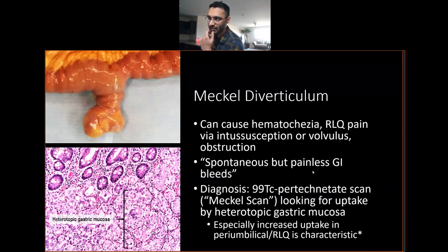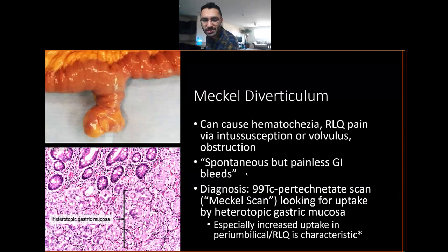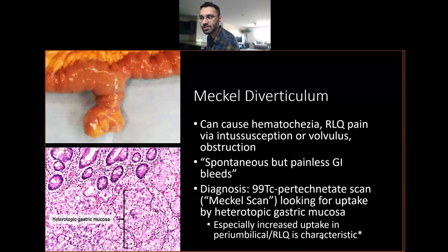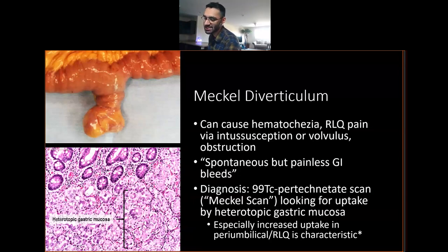The biggest high-yield board exam takeaway for Meckel's diverticulum is the diagnosis and presentation. Similar to diverticulosis in older people, you get spontaneous but painless GI bleeding — painless hematochezia. Board exams love asking about the technetium pertechnetate scan, also called the Meckel scan. It shows an area of foci where the Meckel's diverticulum and heterotopic mucosa are located — very classically in the periumbilical and right lower quadrant area. If you see a weird-looking scan with an area around the umbilical region that lights up, it's probably Meckel's diverticulum.